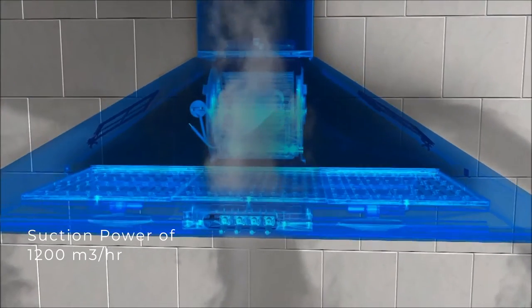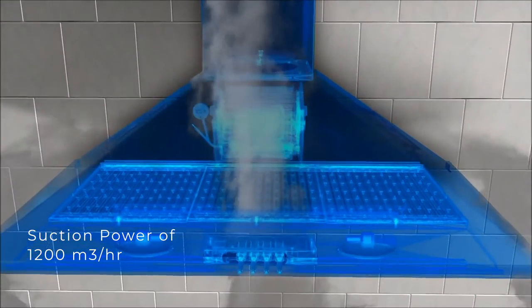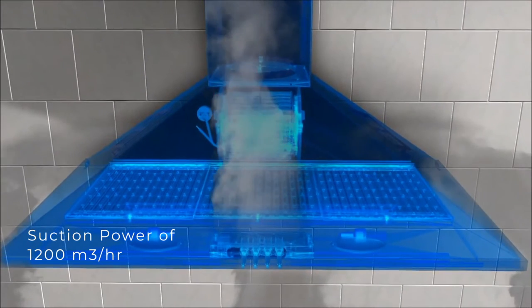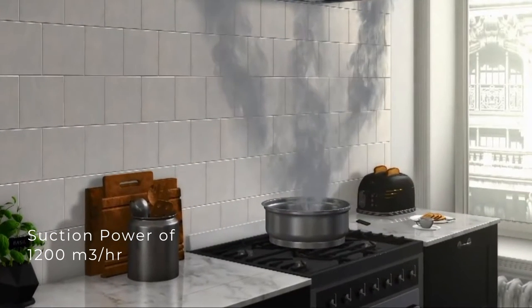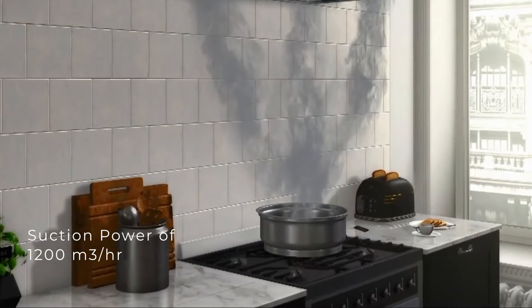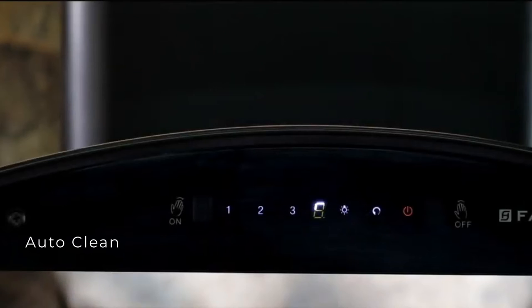The 60 centimeter and 90 centimeter chimneys are built with a powerful motor to enable a suction power of 1200 cubic meters per hour, which maximizes airflow to the kitchen by removing smoke. The auto clean technology helps you clean